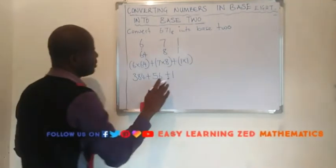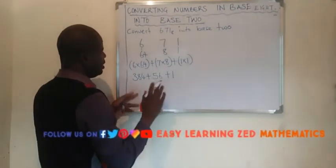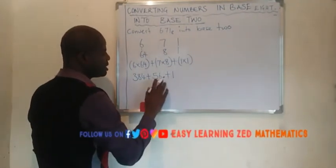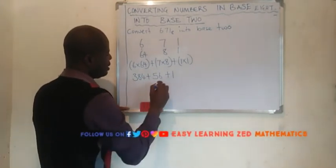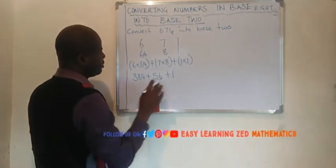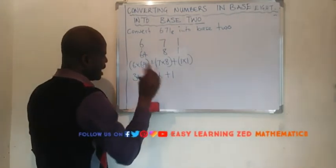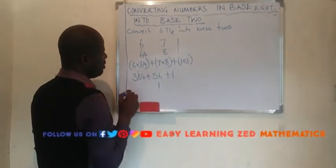Now let's add them. So we're going to say 1 plus 6, that is 7 plus 4, 11. So we shall write 1 here and we carry 1. So 1, we shall put it here.